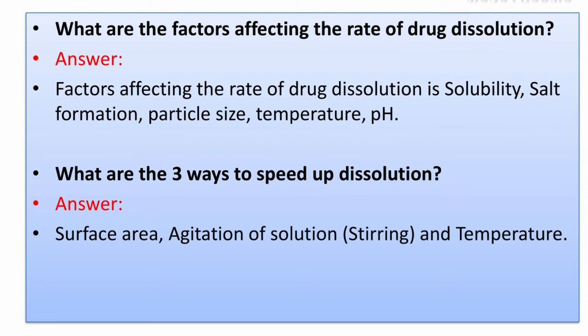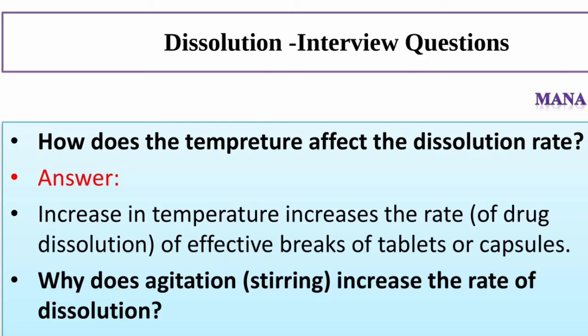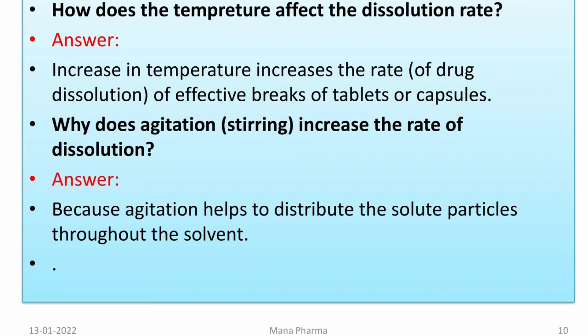What are the three ways to speed up dissolution? Answer: Surface area, agitation of solution, and temperature. Agitation of solution means stirring. How does temperature affect the dissolution rate? Answer: An increase in temperature increases the rate of drug dissolution, effectively breaking down tablets or capsules. Why does agitation or stirring increase the rate of dissolution? Because agitation helps to distribute the solute particles throughout the solvent.